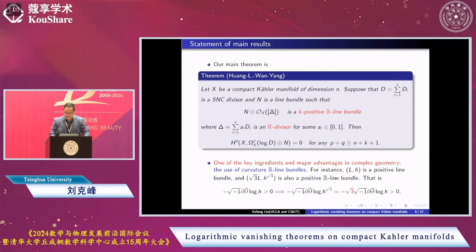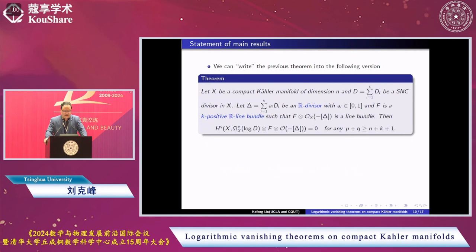For instance, we have a positive line bundle O with a metric H. We can formally write a square root of L and H to the power of square root 3 because the curvature is well defined. Taking logarithm, the corresponding curvature is just given by the multiple of square root 3 of the curvature of line bundle O with metric H.